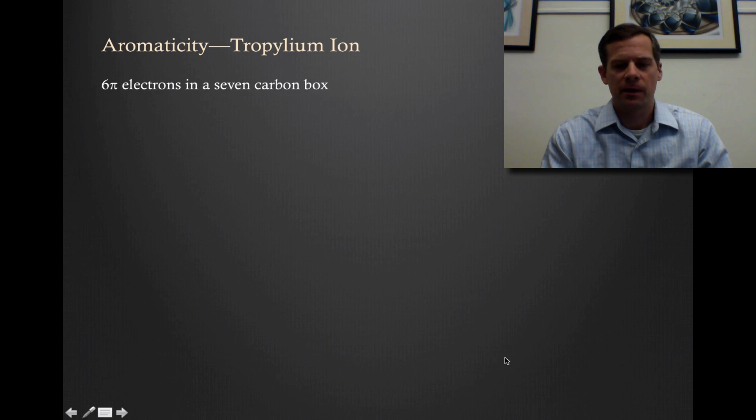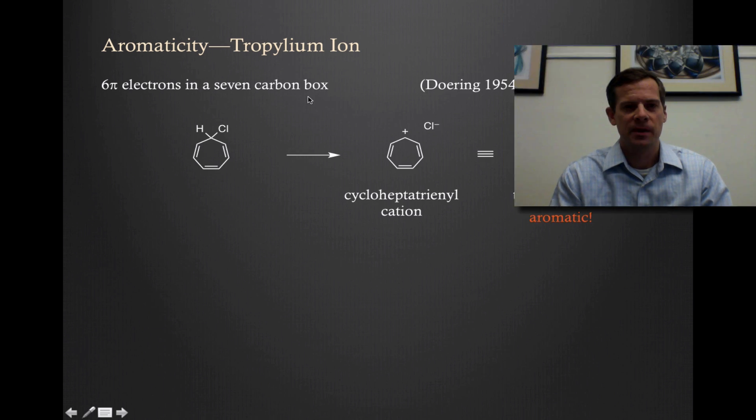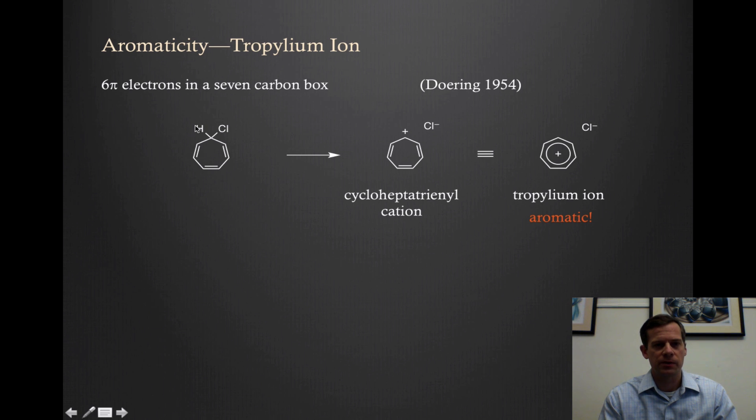We can see some fairly unusual situations. For example, tropylium ion. This is an example where we have six pi electrons, but it actually occurs in what you might call a seven-carbon box. So you might have a precursor, cycloheptatriene with a chloride ion or some leaving group. This was first prepared by Doering in 1954.